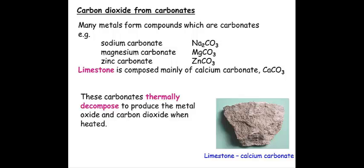Another method for producing carbon dioxide is through thermal decomposition of metal carbonates. For example, if we take sodium carbonate, magnesium carbonate, and zinc carbonate and heat it strongly, then the heat will cause the decomposition or breakdown of metal carbonate, releasing carbon dioxide gas and a metal oxide.